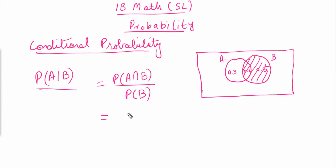The overlapping region probability is 0.2, and the probability of B is 0.2 plus 0.5, which equals 0.7. So P(A|B) = 0.2 / 0.7, which equals 2/7.